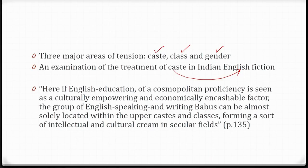Khair states: 'If English education of a cosmopolitan proficiency is seen as a culturally empowering and economically encashable factor' — notice how language is being seen as culturally empowering and economically encashable — 'the group of English-speaking and writing Babus can be almost solely located within the upper caste and classes, forming a sort of intellectual and cultural cream in secular fields.' Notice this connection Khair draws between English language and those empowered by it. It is not a novel idea — many sociologists have spoken about it — but to see this in the context of Indian English fiction is perhaps the originality that Khair brings to this strand of argument.